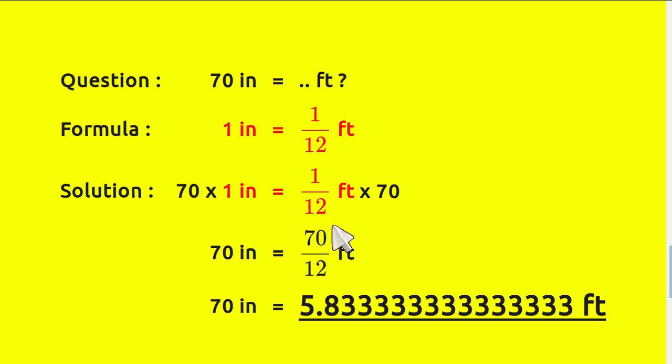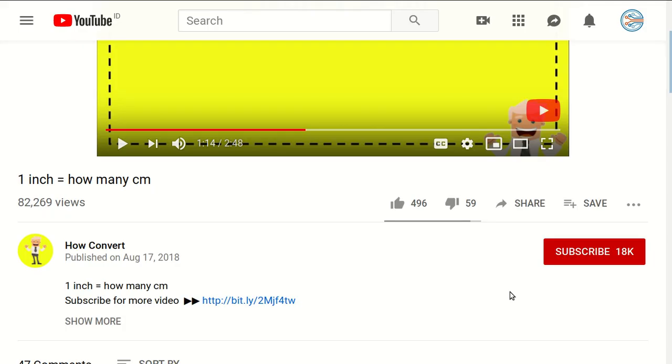Now we have 70 divided by 12. 70 inches equals 70 divided by 12 feet, and 70 inches equals 5.833333333 feet. Okay, that's all of it. Thank you for watching.